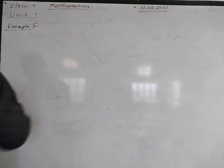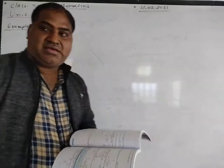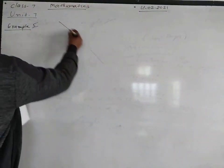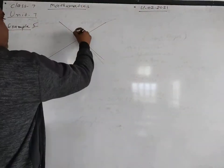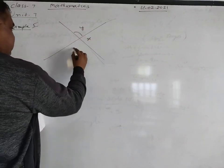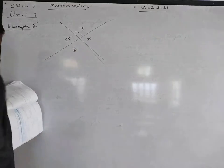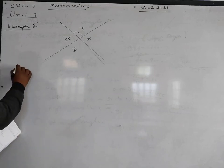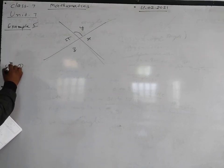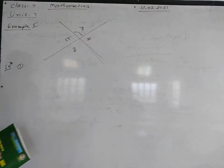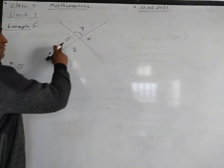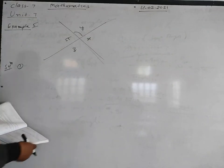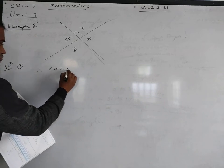Example 5: Find the value of x, y and z in the following figure. A figure is given with angles y, x, z and one angle is given as 55 degrees. So first of all, angle x is equal to 55 degrees because angle x and 55 degrees are vertically opposite angles. So angle x is equal to 55 degrees.